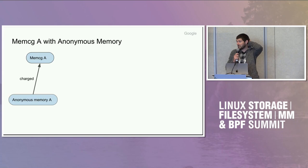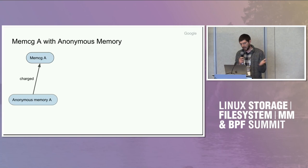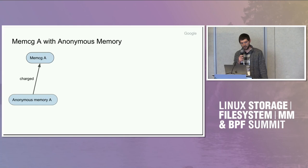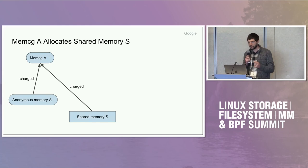So what's the problem? Zombie memcgs. Scenario: you have a memcg with some processes in it. It allocates some anonymous memory. It gets charged for that anonymous memory. memory.current is correct. The same cgroup allocates some shared memory.